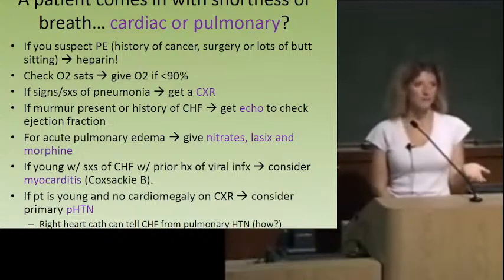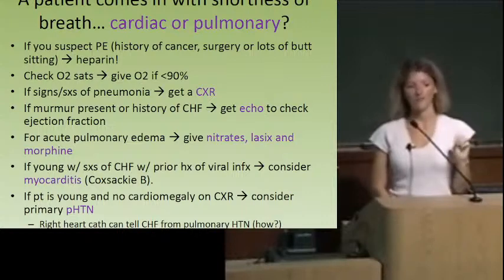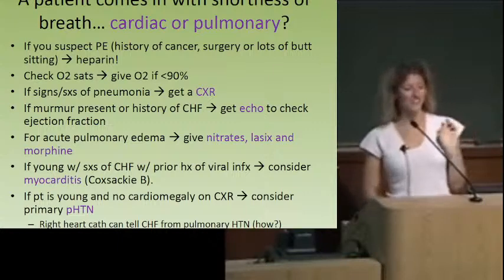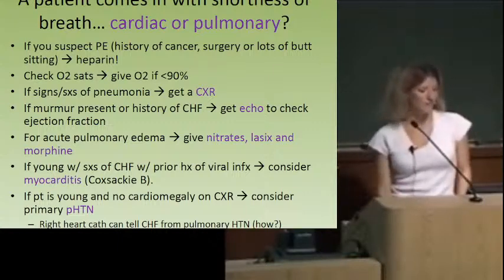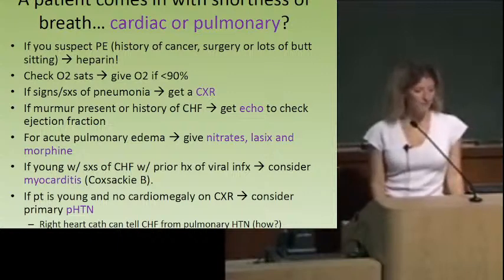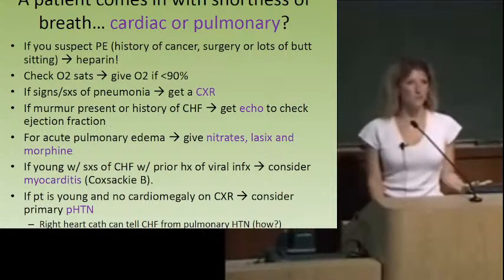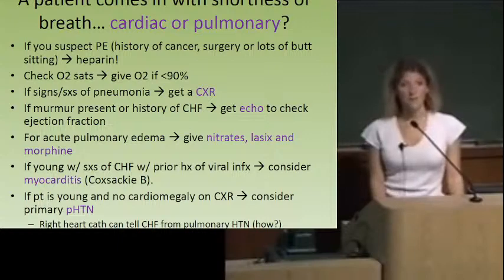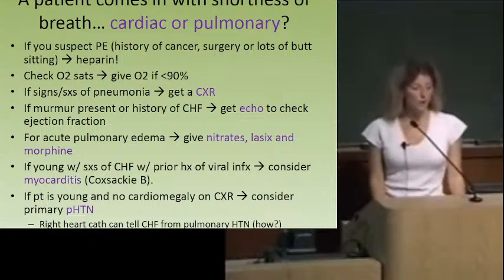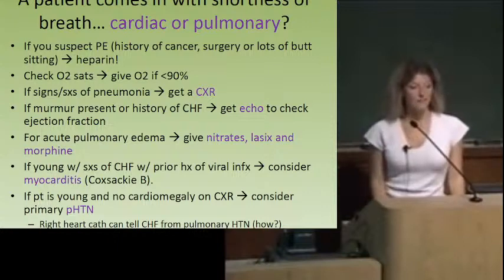In CHF: pulmonary capillary wedge pressure we use as a surrogate for left atrial pressure. In CHF, this is going to be high. In primary pulmonary hypertension, the problem is increased resistance in the pulmonary vessels — blood doesn't even get to the left atrium, it backs up into the pulmonary artery. So in CHF, pulmonary capillary wedge pressure is high. In primary pulmonary hypertension, pulmonary capillary wedge pressure is normal.